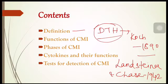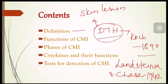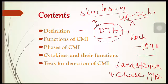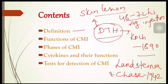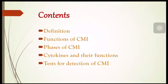Delayed type hypersensitivity is the appearance of a skin lesion after 48 to 72 hours of antigenic injection. After the administration of antigen into the host, skin lesions appear about 48 to 72 hours later — that type of immune response is called delayed type hypersensitivity. Now, moving on to the functions of cell-mediated immunity.